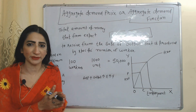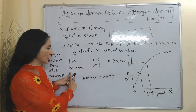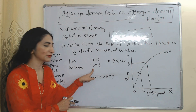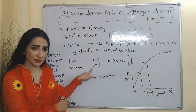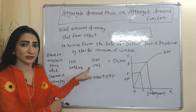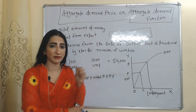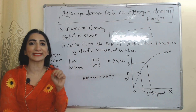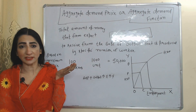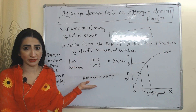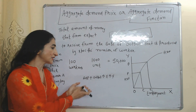For example, there are 100 workers producing 1,000 units, and the firm expects to receive from the sale of those 1,000 units an amount equal to 50,000. This 50,000 will be called the aggregate demand price. As aggregate demand price increases, output will also increase because this is more profitable for the firm.